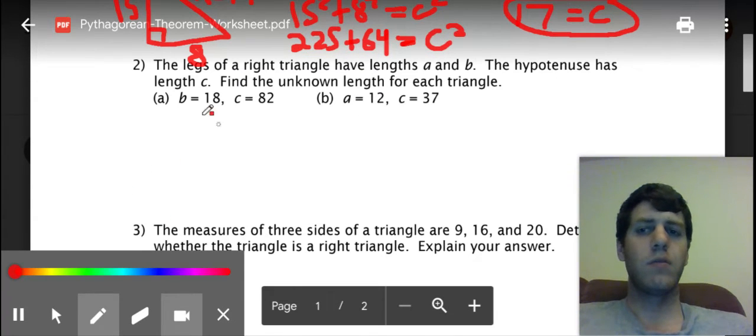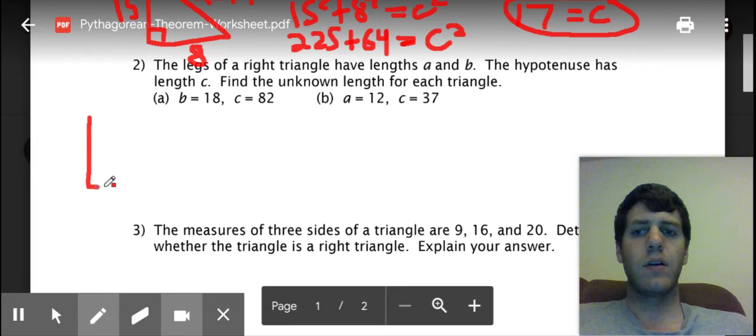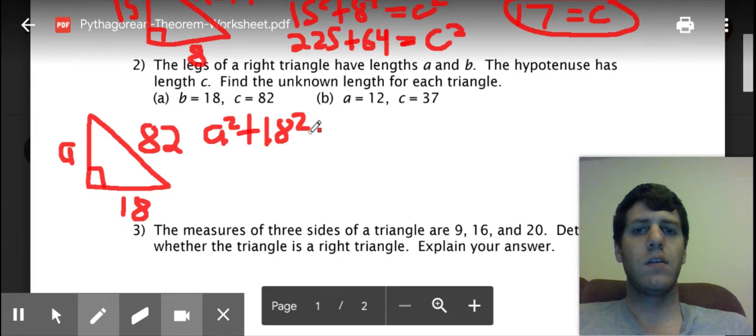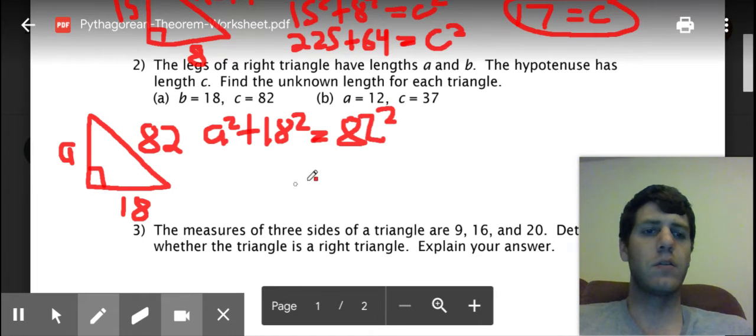So you're going to draw a right triangle. Okay, a and b are the legs so we can call this a, this one's going to be b. We know b is 18 so we can put 18 here and c is always your hypotenuse, right. And so we're going to call this 82. Okay, you can then do a squared plus 18 squared equals 82 squared.